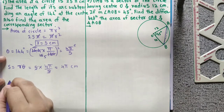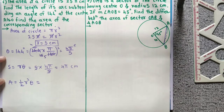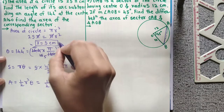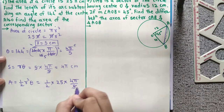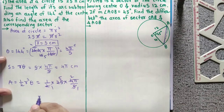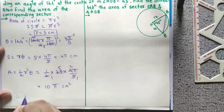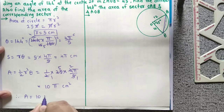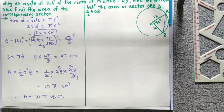Now the area of sector is also asked. The formula for area of sector is half r square theta. So half times 25 times 4 pi by 5. Five ones are 5, five fives are 25, two ones are 2, two twos are 4. The remaining gives 10 pi. Therefore, area of sector equals 10 pi cm square.